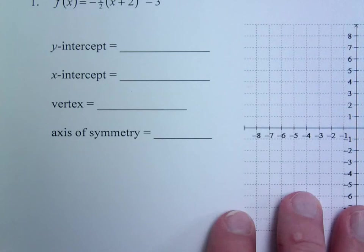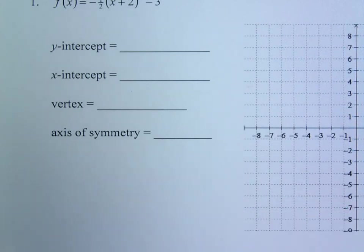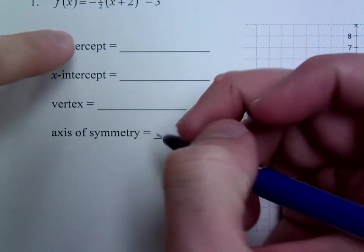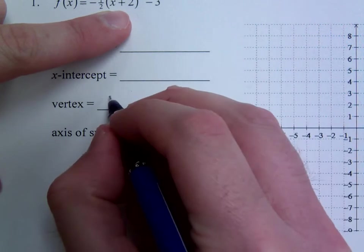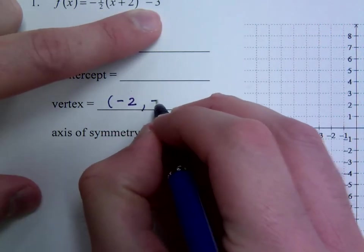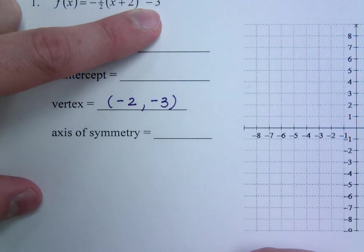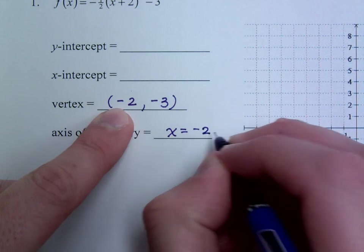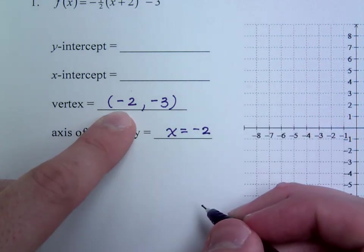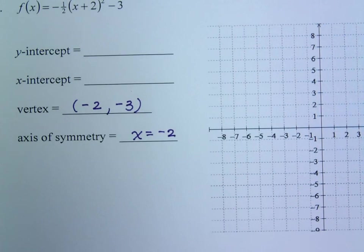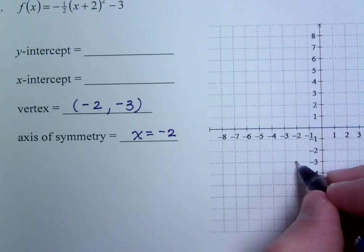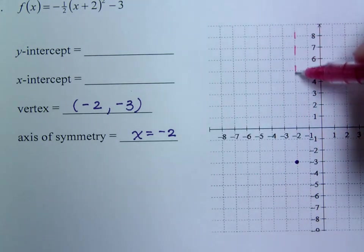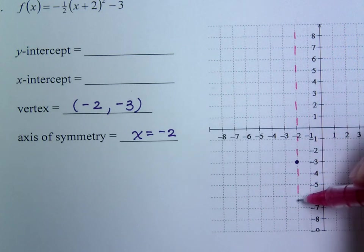If I look at number 1, it's already set up in that perfect form for me to identify lots of things. First I'm going to pick off the vertex. The vertex is going to be the opposite of what you see here. So that means we're moving to the left 2, we're moving down 3. So negative 2, negative 3 is the vertex. My axis of symmetry is always going to be x equals negative 2, whatever this x-coordinate for the vertex is. My line of symmetry is going to be going through this guy right here.